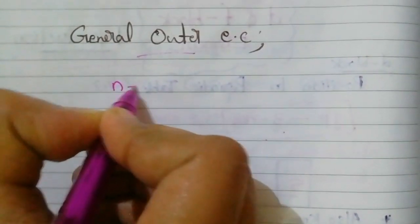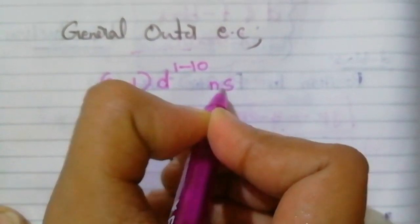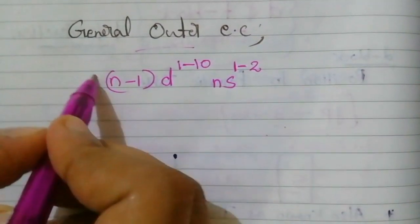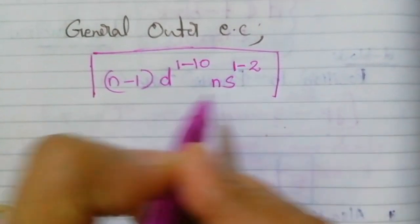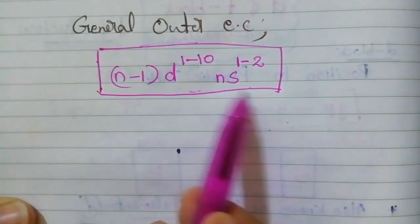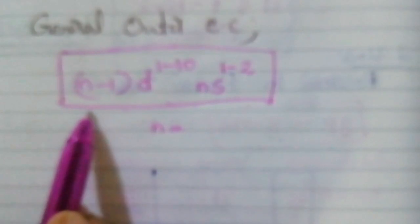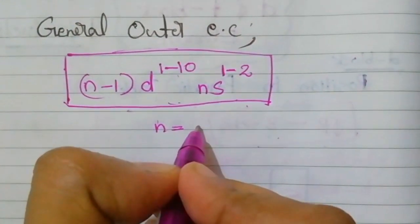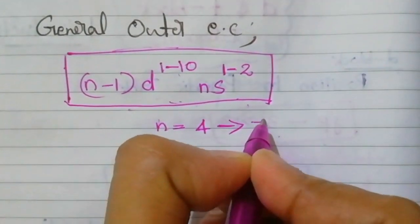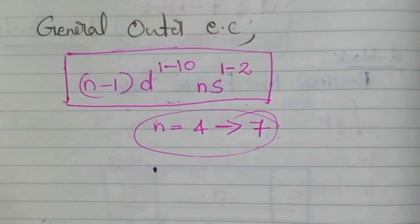Now let's see the general outer electronic configuration of transition elements, which we studied in 11th standard: (n−1)d¹⁻¹⁰ ns¹⁻². Based on this we always write 3D first followed by 4S. Here the n value ranges from 4 to 7, because the orbitals range from 3D to 6D — if n equals 4, it corresponds to the 3D orbital.